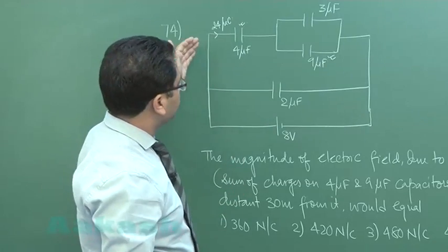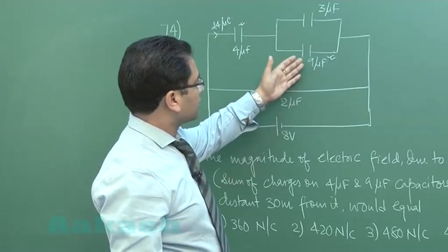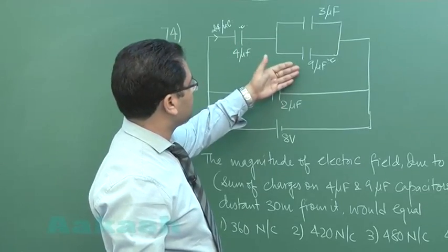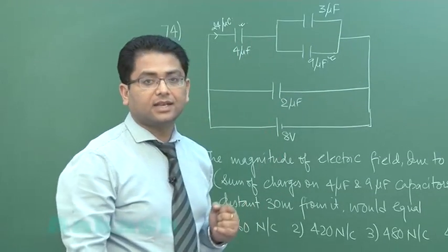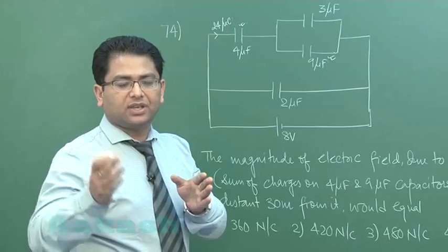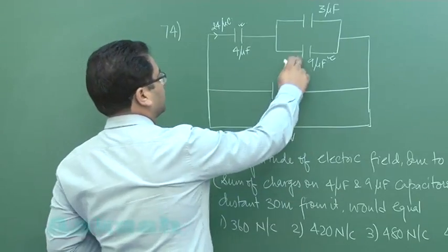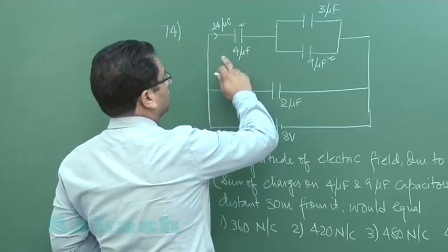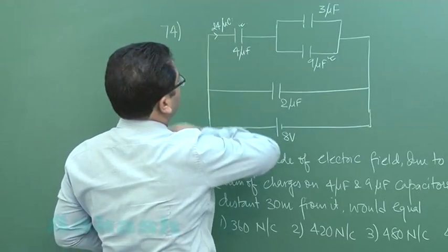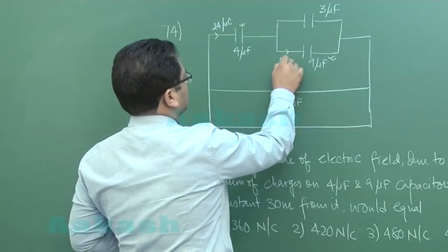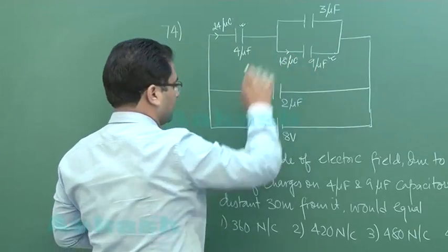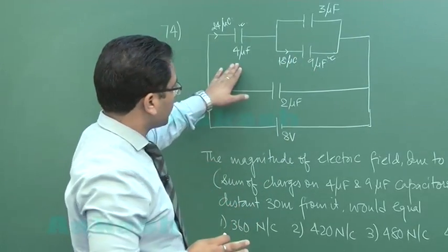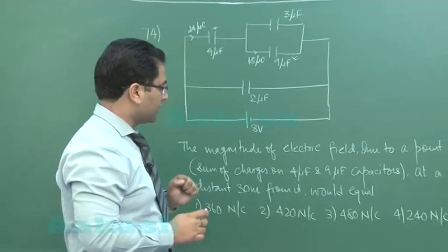And when that 24 divides, it has to divide in the ratio of 3 is to 1, because Q equals CV and V is same. 3 is to 1, that means 3 fourth, so 3 fourth of 24 will be 18 micro coulombs. So here we have calculated the charge on 4 microfarad and 9 microfarad.